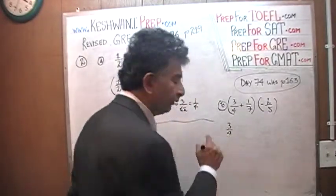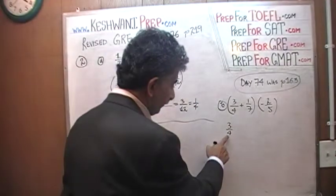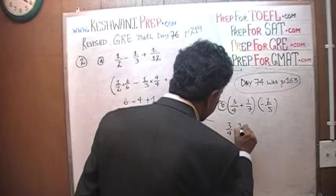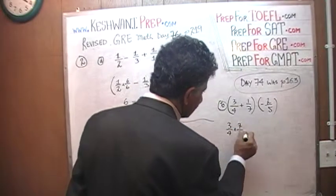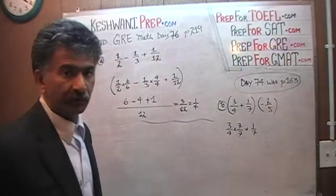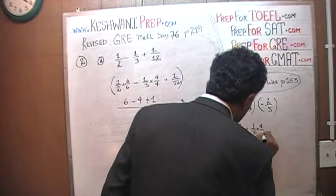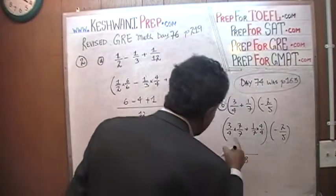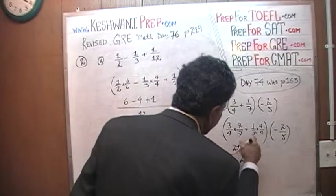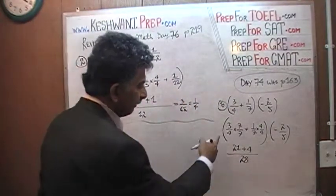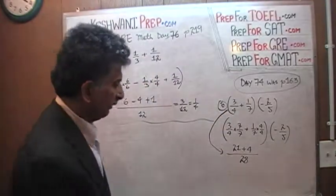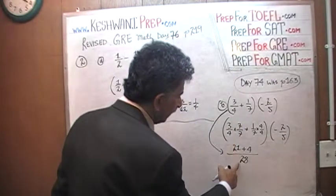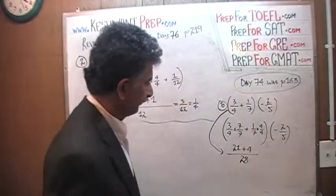We ask ourselves: how can we turn the 4 into 28? By multiplying by 7 — and if we multiply the bottom by 7, we must multiply the top by 7 as well. How can we convert the 7 into 28? By multiplying top and bottom by 4. Then negative two fifths comes along. Most people skip straight to the common denominator of 28: 28 divided by 4 is 7, times 3 is 21; 28 divided by 7 is 4, times 1 is 4.